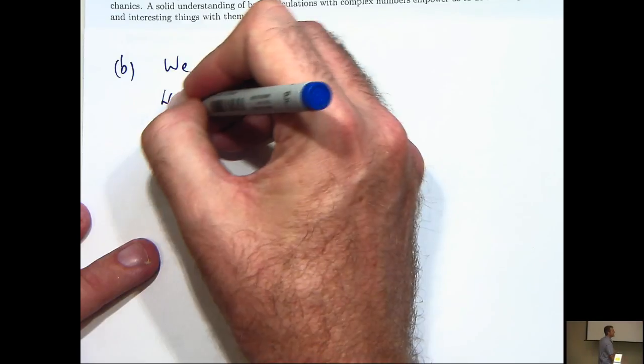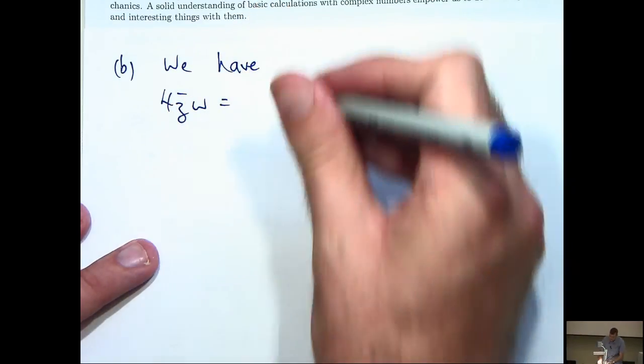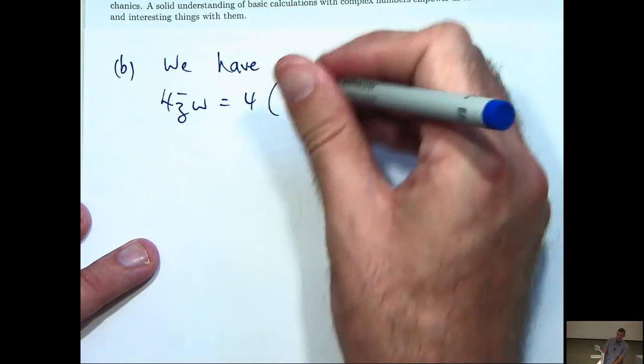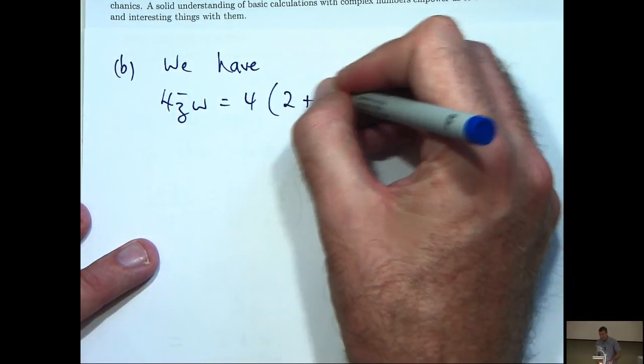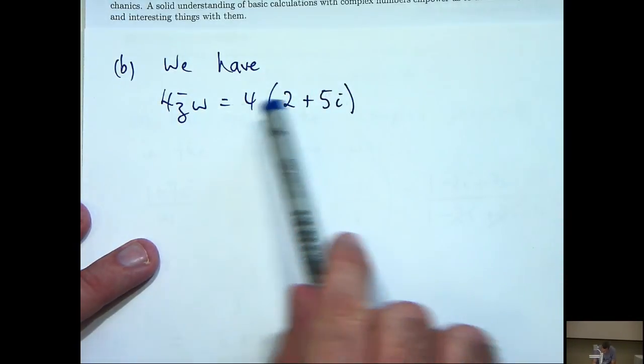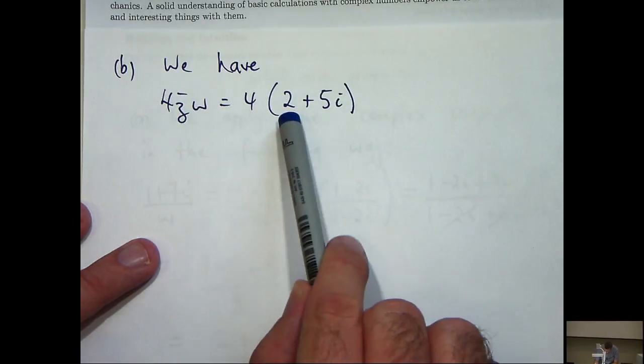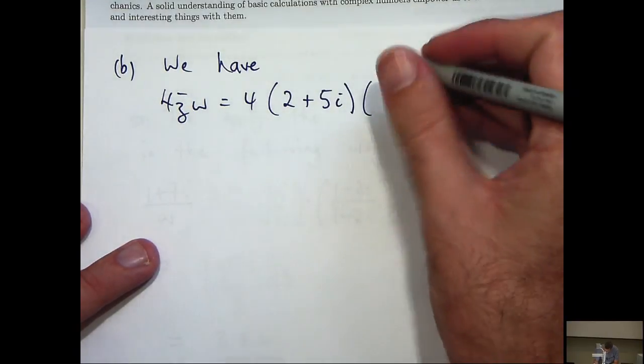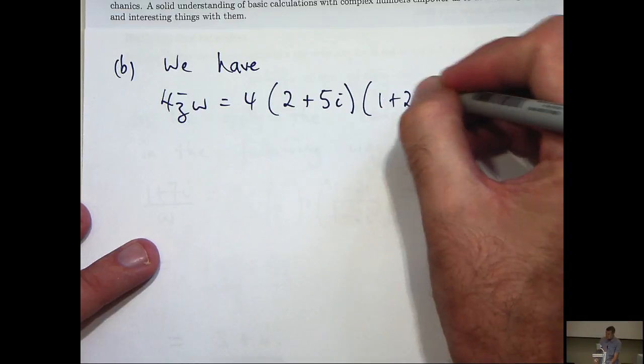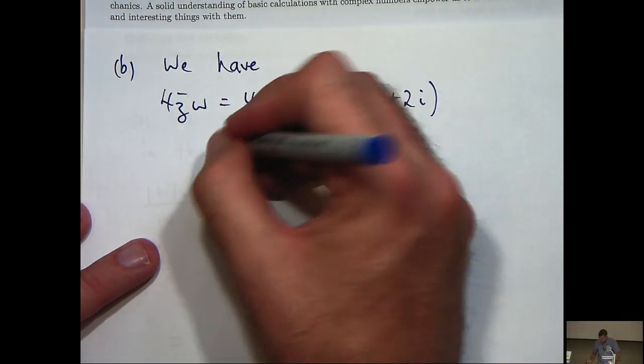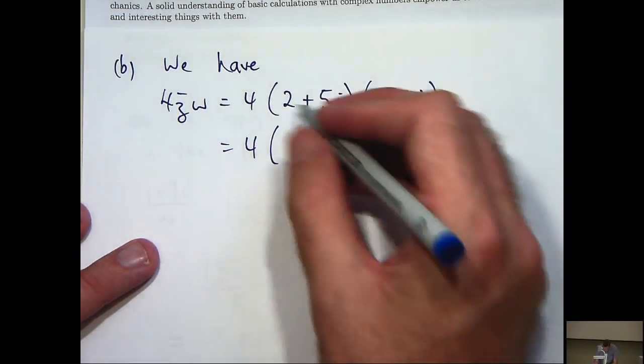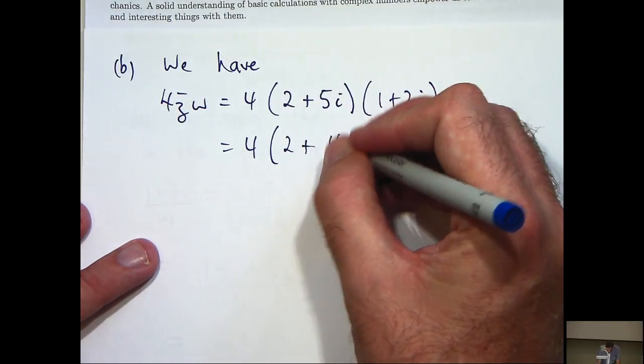The only thing you really have to be aware of is the basic identity i squared equals negative 1. So z was 2 minus 5i. Z bar will be 2 plus 5i. So let's expand our brackets and then we can simplify.